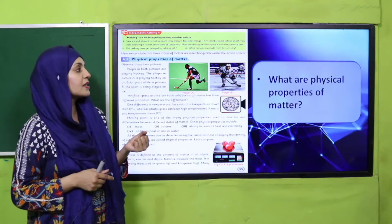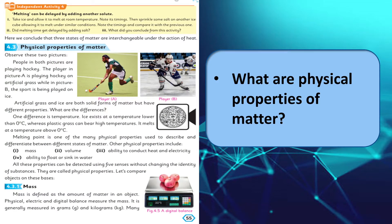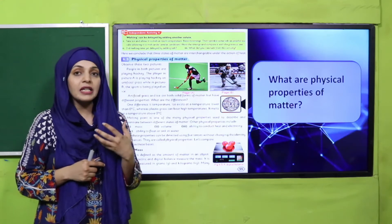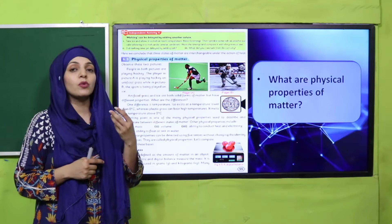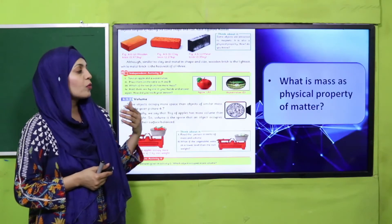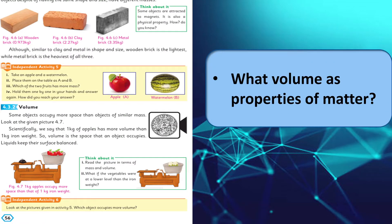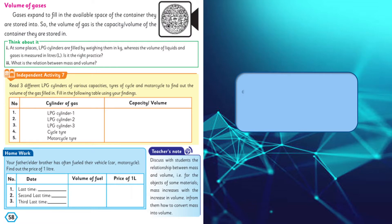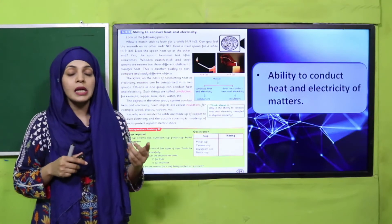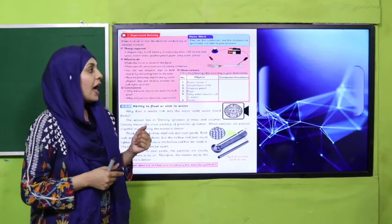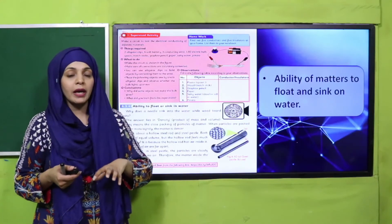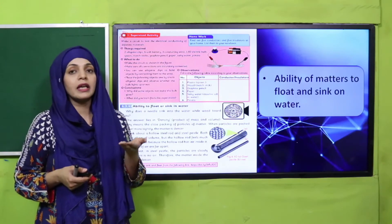Then we discussed the physical properties of matter: volume, density, mass, conduction of heat and electricity, and the ability to float and sink. We discussed mass, then volume — we even did a project on it — and then the volume of gases. We also discussed how metal matters conduct heat and electricity; they are called conductors. If they do not conduct heat and electricity, they are called insulators. Objects that are more dense will sink, and those that are less dense will float.